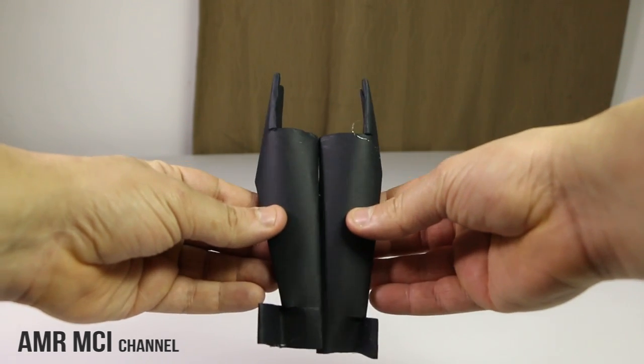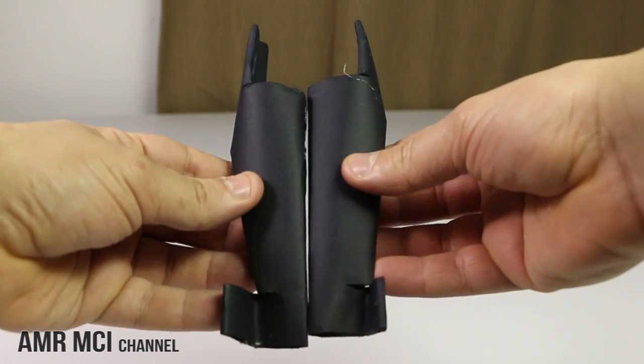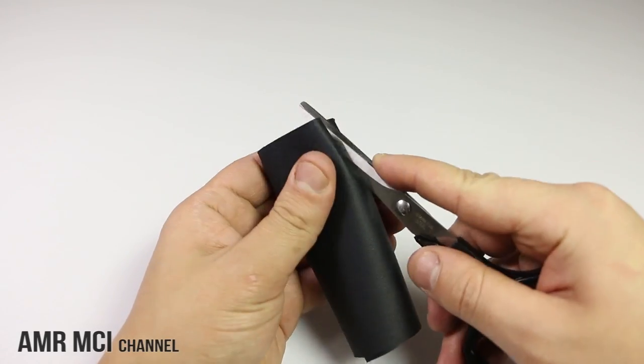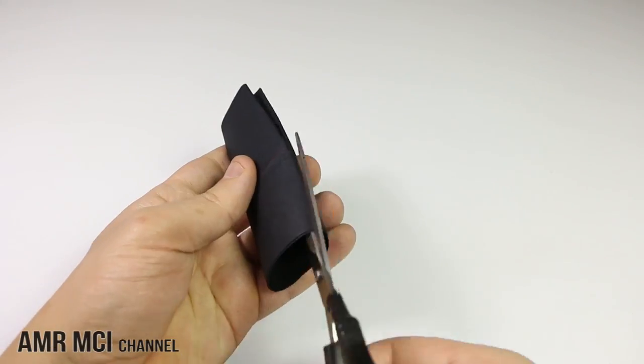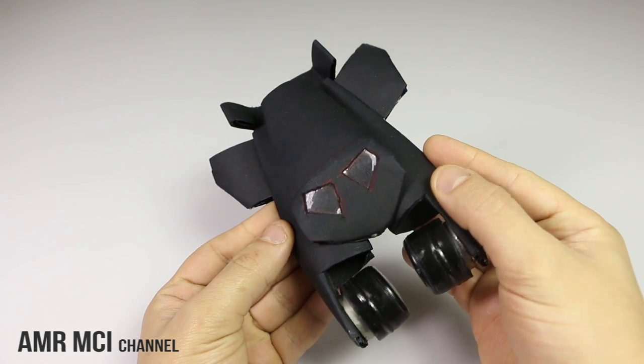Now repeat the same steps with the other piece of roll so we have two pieces like this. After that, take the other roll and crease the corners, then bend it over and cut along the edges to make it look like a cabin.